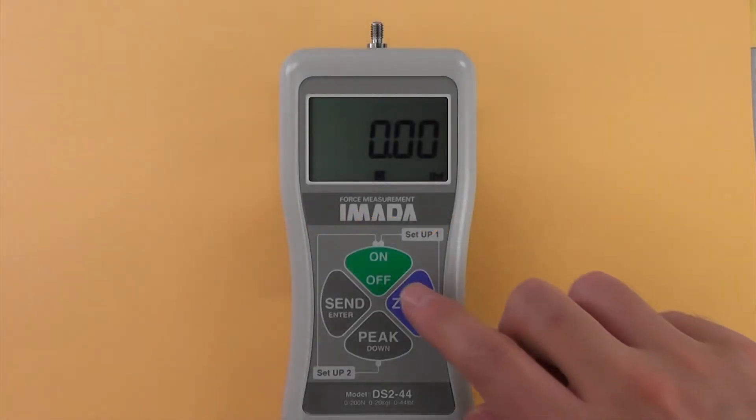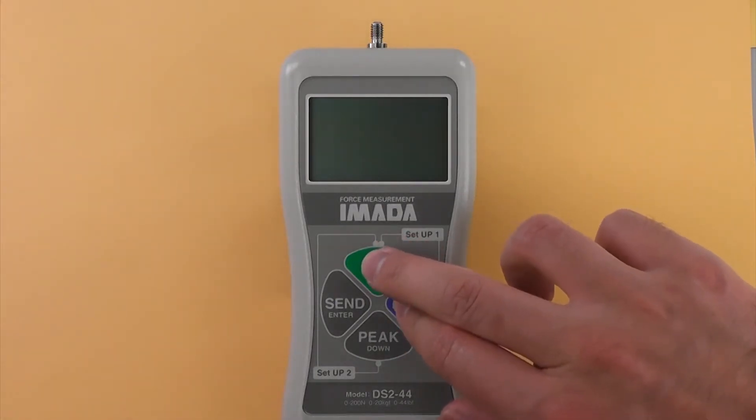Selecting units. Turn off the gauge. Hold 0 and press ON once.